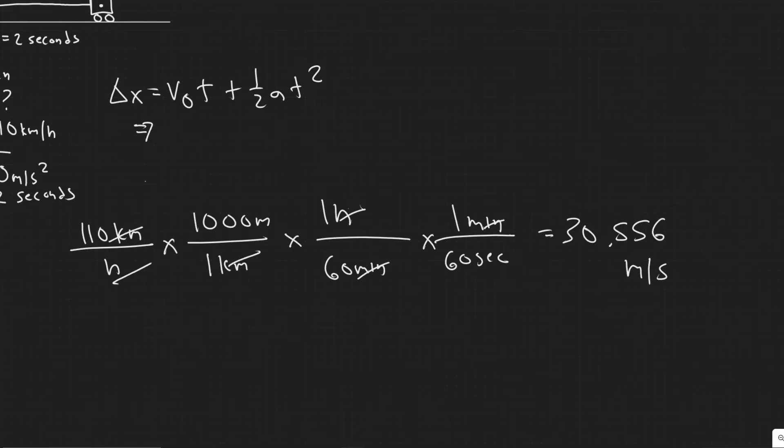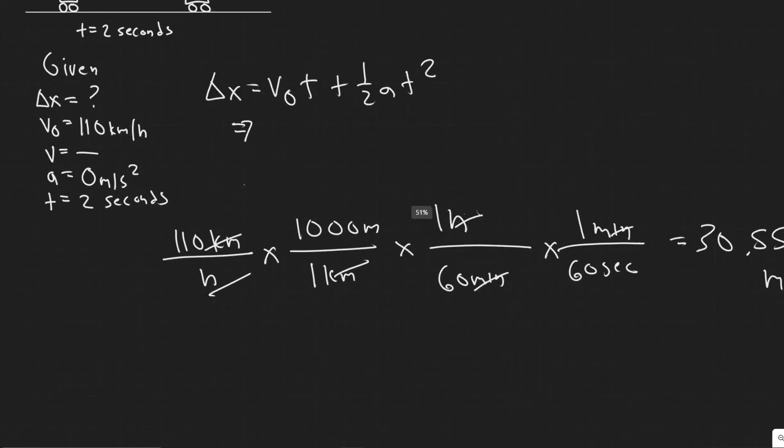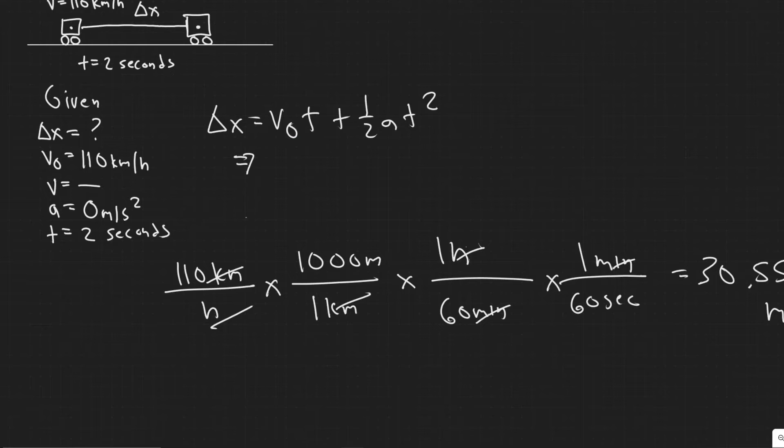And the units are again, meters per second. So now we have it in the correct units, our initial velocity. So now we can plug it in since they're all correct. So the initial velocity is, as I said before, 30.556 times the time how long this goes for two seconds plus,